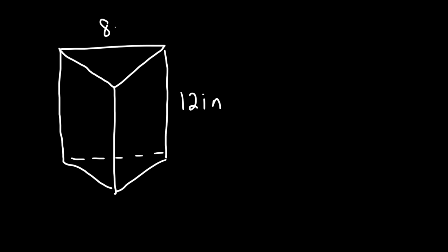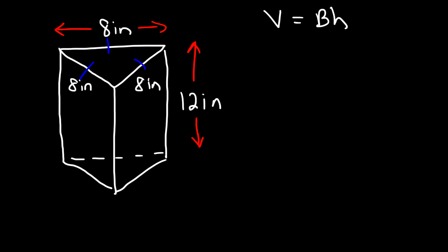Now let's try a different example. Let's say we have a prism where the height of the prism is 12 inches and the side of the triangle is 8 inches, and you're told that it's an equilateral triangle. What is the volume of the prism? If we have an equilateral triangle, that means all three sides have the same length, so each side is 8 inches. The area of an equilateral triangle is the square root of 3 divided by 4 times s squared, where s is the side length.